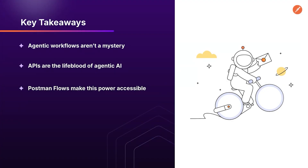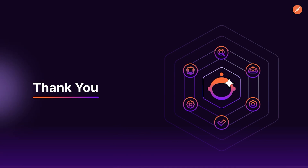Let's wrap this up. Three big takeaways. First, agentic workflows are not a mystery — they're built by giving agents access to tools and then the logic to use them effectively. We unlock adaptability by separating the what from the how. Second, APIs are the lifeblood of agentic AI. Your agents can't act without tools, and tools in our modern stack mean APIs — whether you're fetching headlines, pulling data from your CRM, or triggering a support escalation, the agent is only as powerful as the APIs it can access. And lastly, Postman Flows makes this power really accessible — it's declarative visual logic abstracted from your agent and exposed via API. And that is how we can bring super-powered agentic systems to life. Thank you so much for your time today!